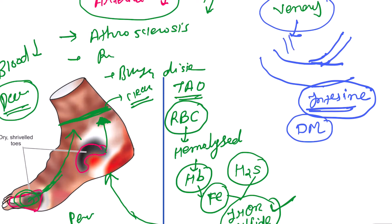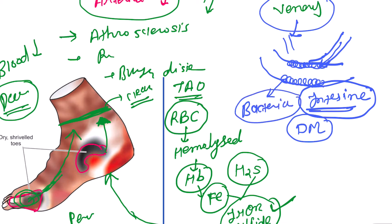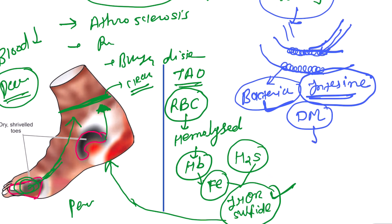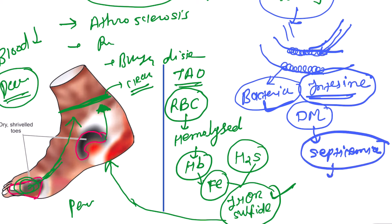When venous blood is blocked but the artery is still supplying blood, that particular part becomes flooded with blood. Oxygen levels are very high, giving bacteria an excellent atmosphere for growth. In wet gangrene, bacterial growth is very high — bacteria multiply, enter the blood, and can result in septicemia. The most common complication of wet gangrene is septicemia, which more often leads to death.